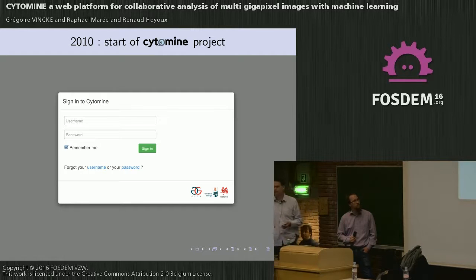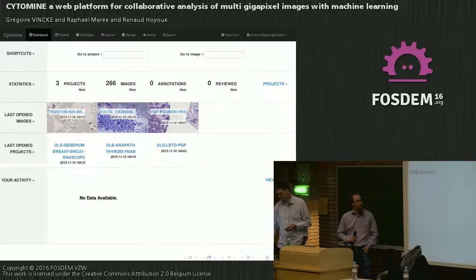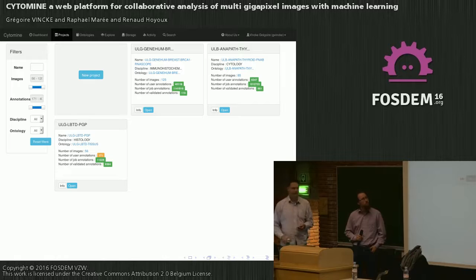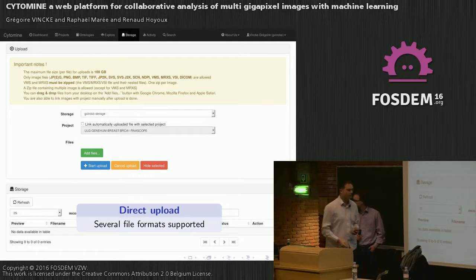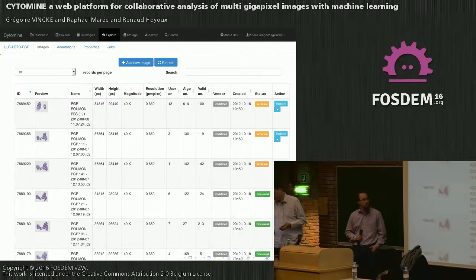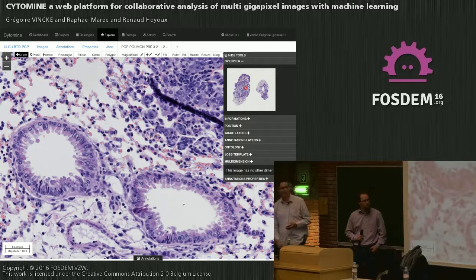In 2010, we started the Cytomine project to build a tool to be able to do that. First of all, there is no public page — users, who are generally researchers, students, or clinicians, must authenticate themselves. We have roles and permissions inside the platform and we can link with an LDAP server for institutional authentication. When you go on the platform, you have a dashboard where the user can see statistics about their own use and direct links to the last images and projects opened. You can manage different projects, create new ones, set parameters, and directly upload files through the web — even very large ones.